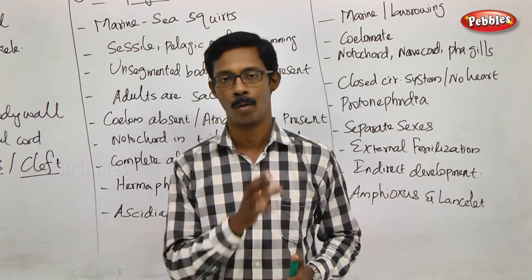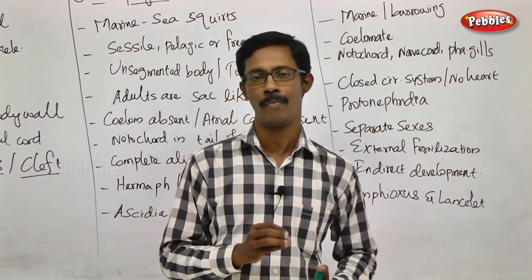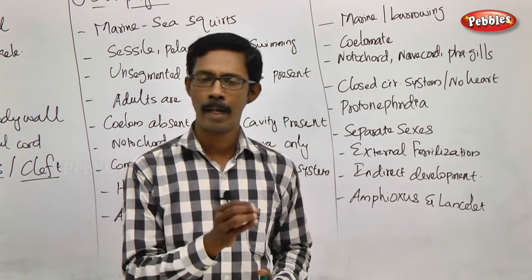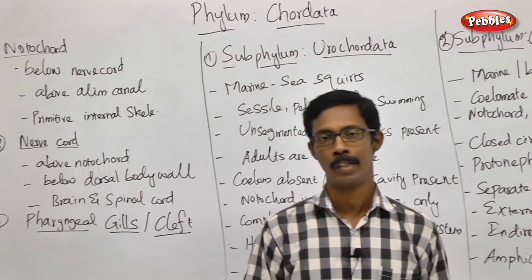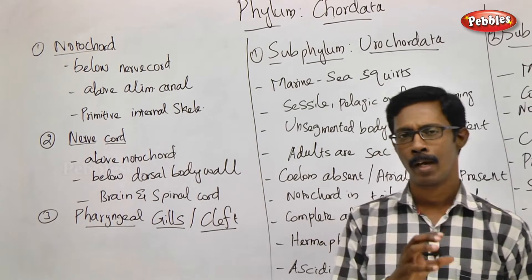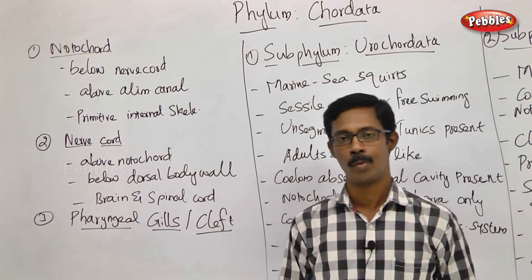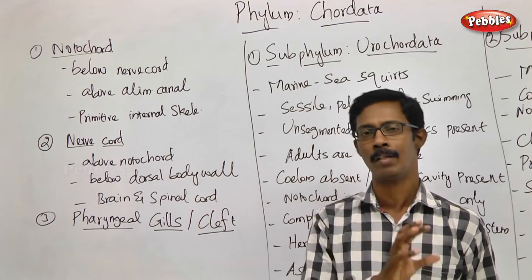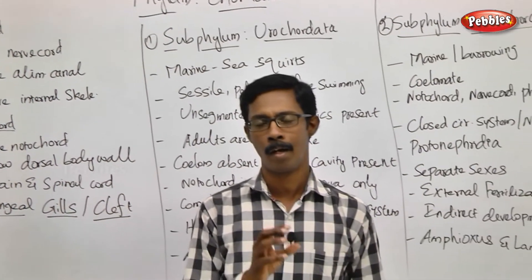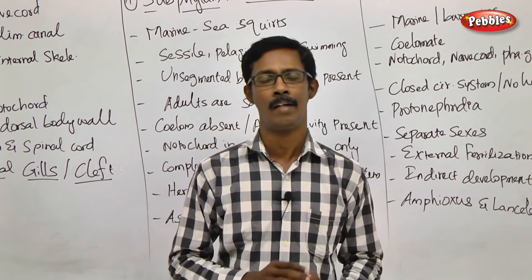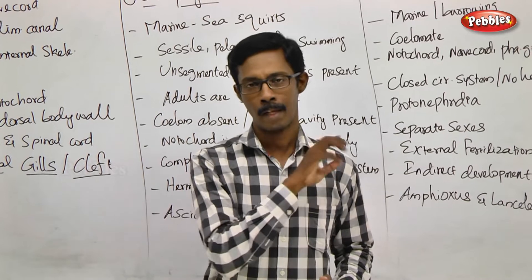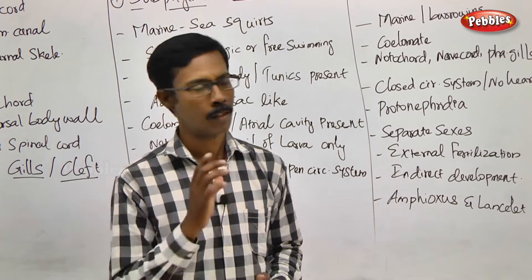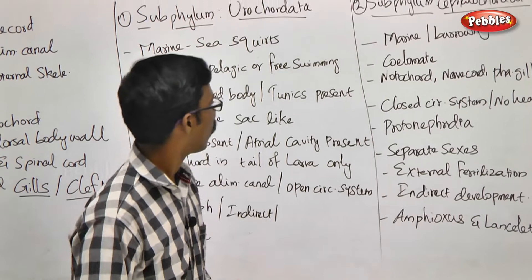Three characters are applicable. There is a notochord in any stage. Pharyngeal gills is a primitive stage character. There is a nerve cord. In this case, these are very primitive characters that represent chordata. We will talk about two sub-phyla: Urochordata and Cephalochordata.